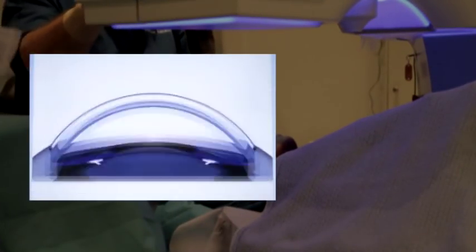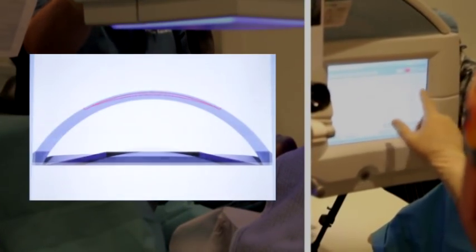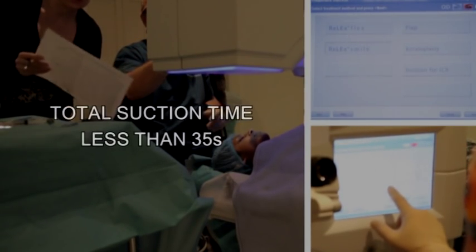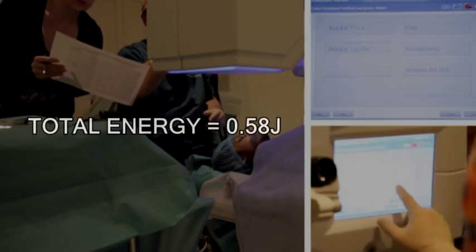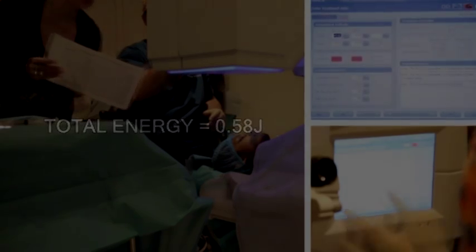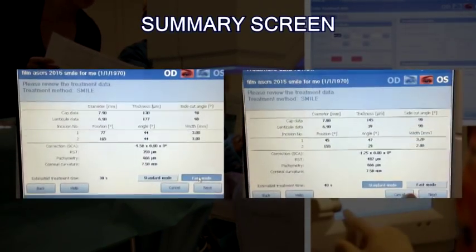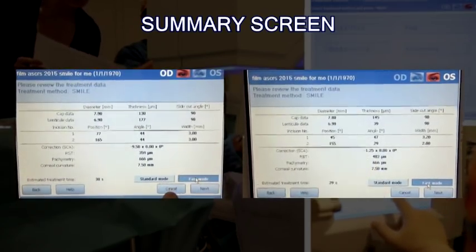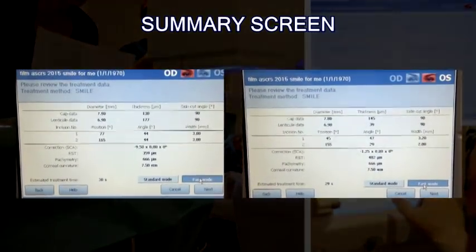Cap and lenticule parameters along with the size and number of incisions are programmed in the laser. The total suction time is less than 35 seconds and the total energy is 0.58 joules. These do not vary according to the refractive treatment because the laser always uses the same incision parameters but simply places them farther apart for higher corrections.